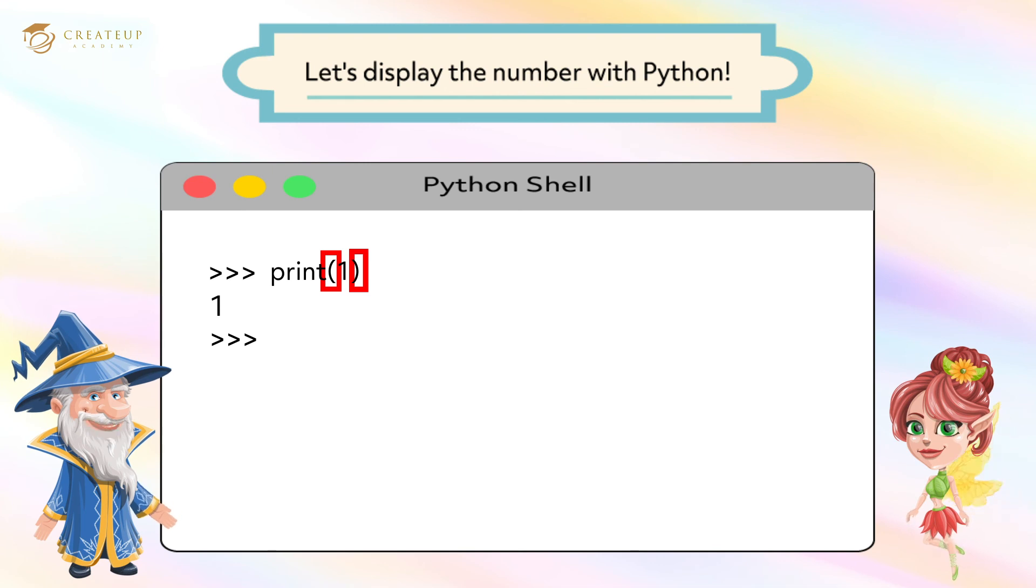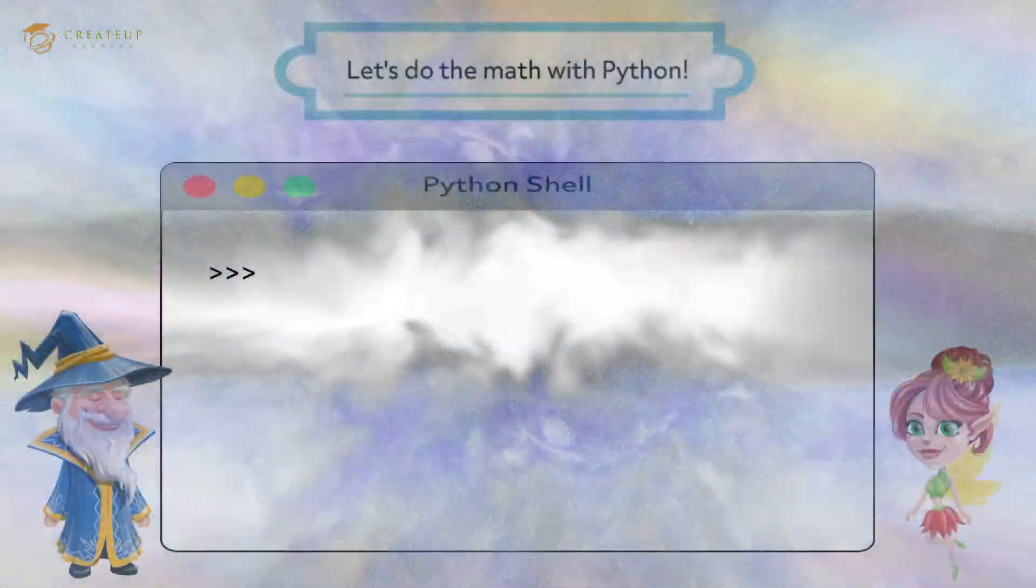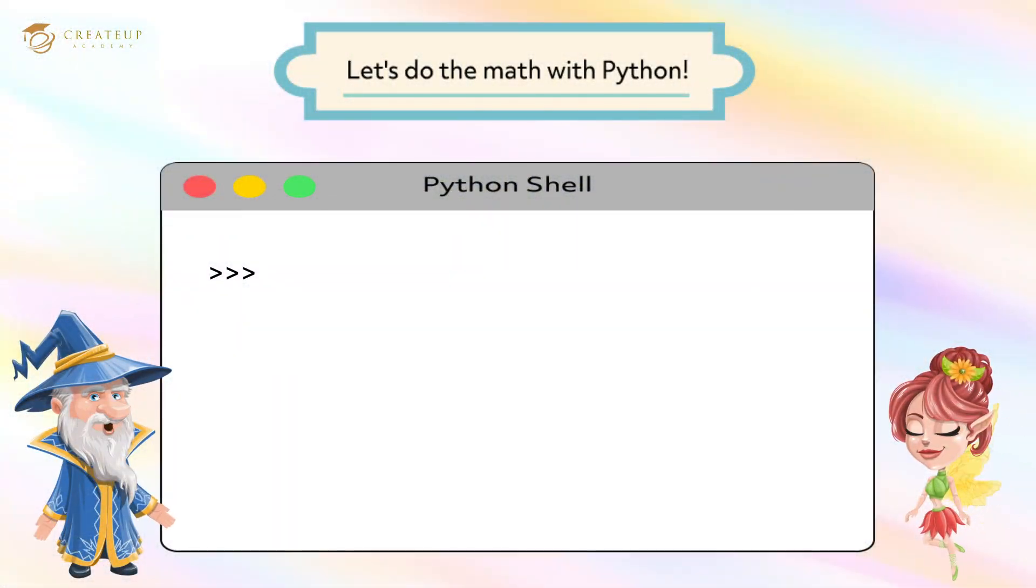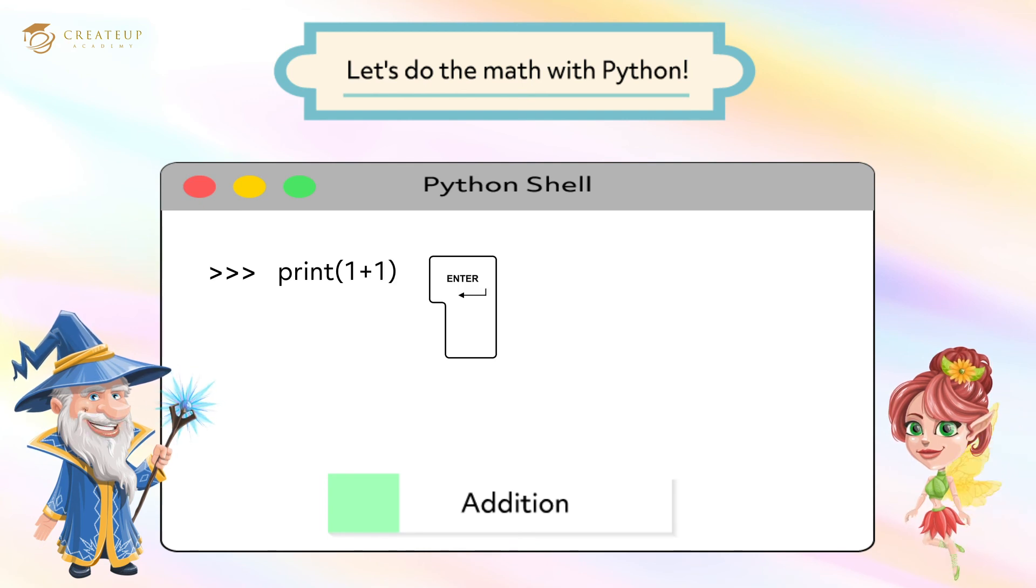Let's do the math with Python. First, let's do a simple addition. Type print after the prompt and type 1 plus 1 in parentheses. The next time you press the Enter key, the result of the calculation, 2, is displayed. Great! Python can also calculate.